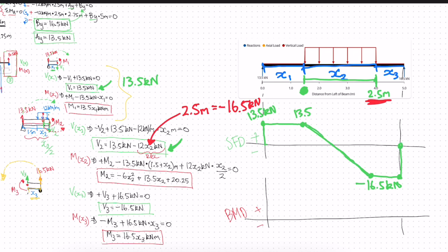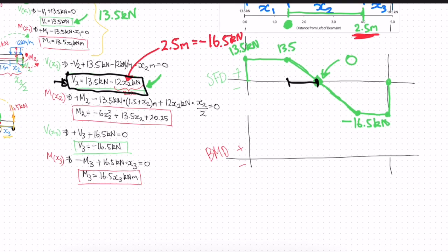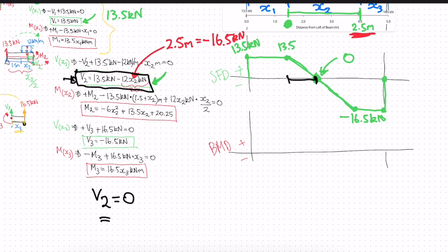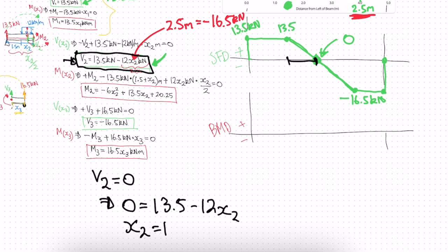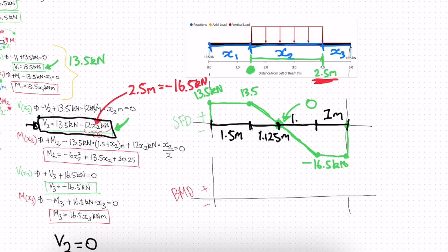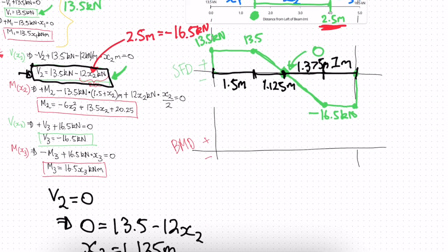We can also find the point where the shear is zero. Setting V2 equal to zero: 0 equals 13.5 minus 12·X2, solving gives X2 equals 1.125 meters. So the shear is zero at 1.125 meters into section 2. The other known distances are 1.5 meters, 1 meter, and 1.375 meters at key points along the beam.